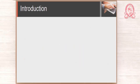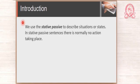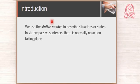Those are verbs that we have to remember. We use the stative passive to describe situations or states. In stative passive sentences, there is normally no action taking place. We use it to describe situations or states — if you have a situation or a state, there is no action taking place. So we use the stative passive when there is no action taking place.